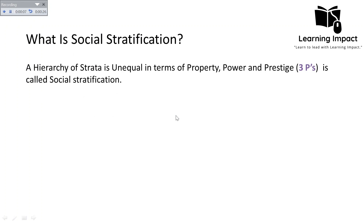Social stratification is a hierarchy of strata which is unequal in terms of property, power, and prestige. It is a kind of hierarchy or categorization — a system in which individuals have been divided into layers arranged from top to down. A stratum is a kind of group, sphere, or rank into which individuals are assigned. This hierarchy can be on the basis of property, power, or prestige, when these resources are unevenly distributed in society.